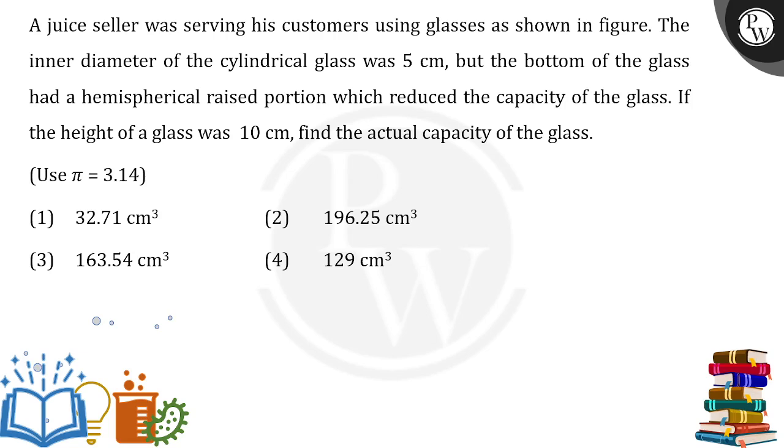You would have seen that a big glass would be there, but inside the glass there is a portion which will be coming out like this. This is the hemispherical upward portion inside the glass. For this particular glass, we have reduced the capacity of the glass because whatever volume would have been inside the cylinder would not be there anymore because the hemisphere will take up some volume.